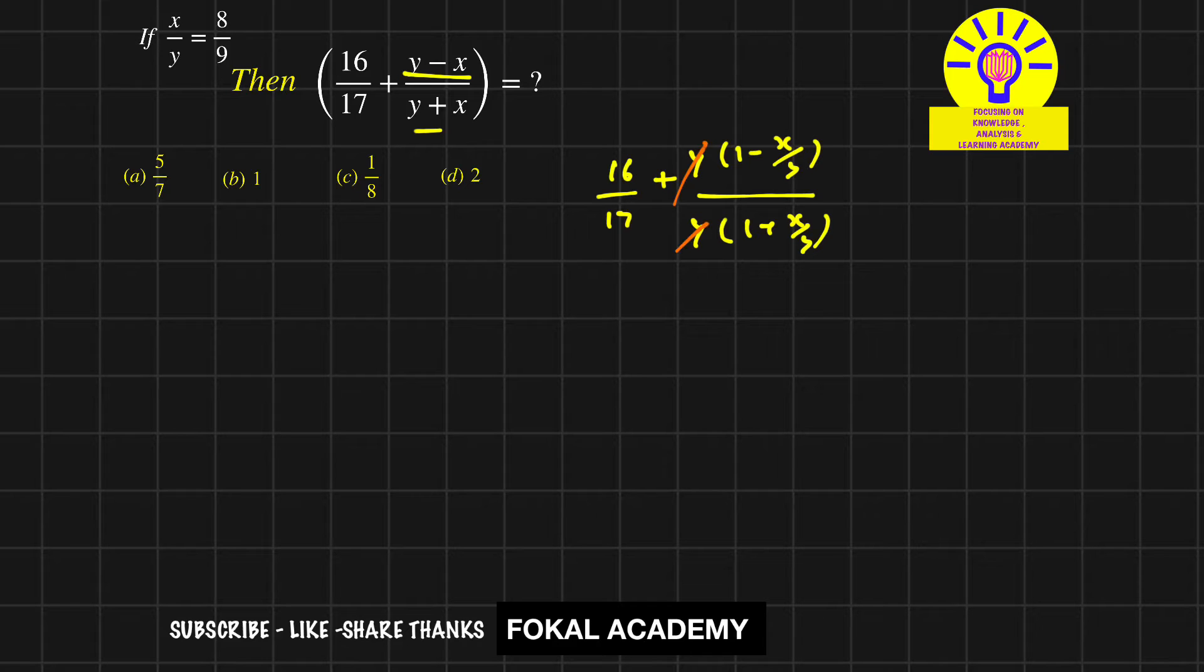So here y cancels. Now it becomes 16 by 17 plus (1 minus x by y) upon (1 plus x by y). But we know that x by y is given as 8 by 9. Now substitute this value here.